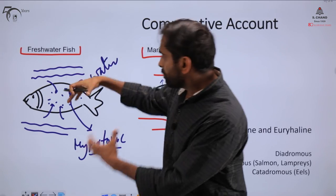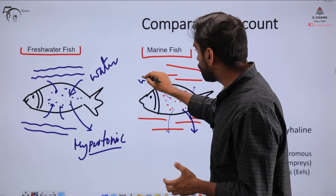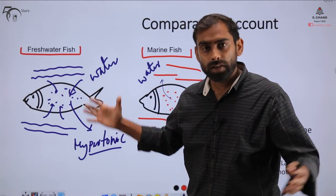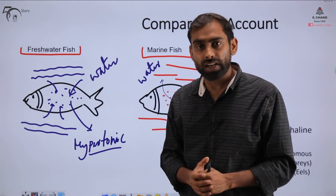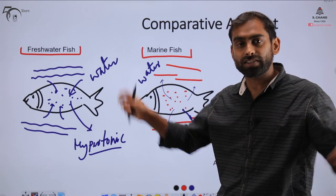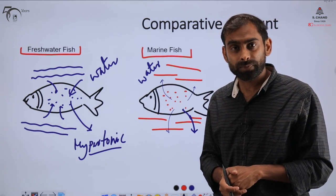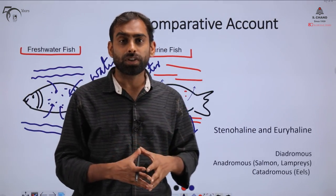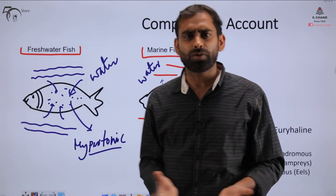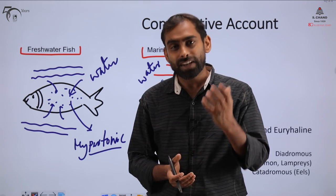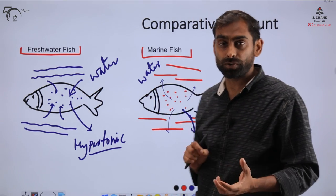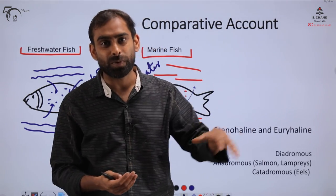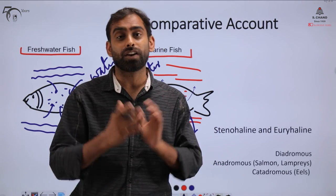Because of this osmotic difference in freshwater fish, water continuously flows inward through the skin. If unchecked, the cells would swell and burst due to excess water. Conversely, in marine fish, water is continuously lost outward. Marine fish — surprisingly — have to drink a lot of water despite living surrounded by water. Water enters through the mouth or through the gills to keep the body hydrated.